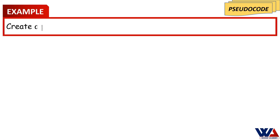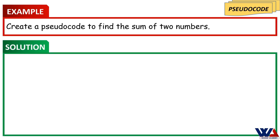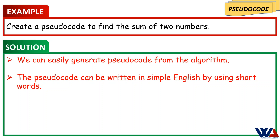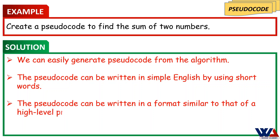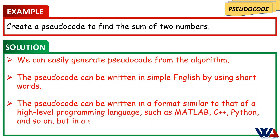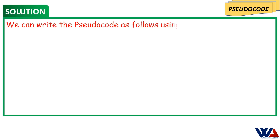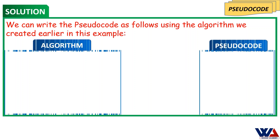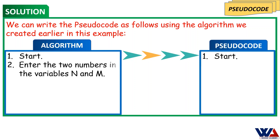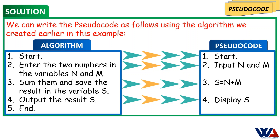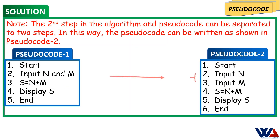Example: Create a pseudocode to find the sum of two numbers. We can easily generate pseudocode from the algorithm. The pseudocode can be written in simple English using short words, in a format similar to a high-level programming language such as MATLAB, C++, or Python, but in a simplified version without adhering to strict syntax. The second step in the algorithm and pseudocode can also be separated into two steps, as shown in pseudocode 2.0.